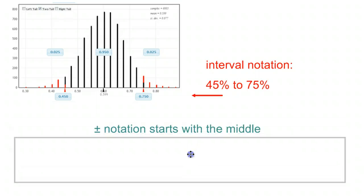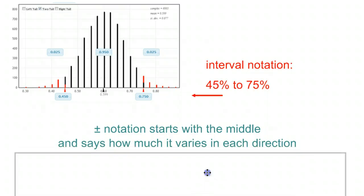To do plus-minus notation, you start with the middle. In this case, it would be 60%. And then we say how much it's going to vary in each direction. It's 60% plus or minus some amount.